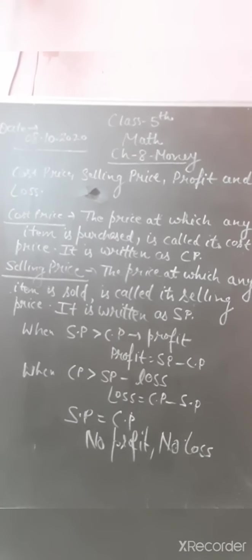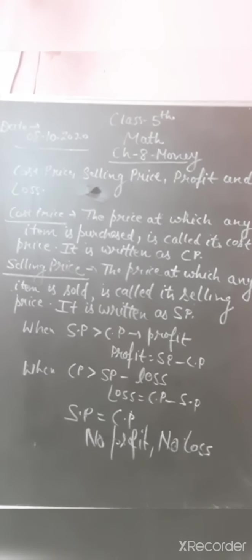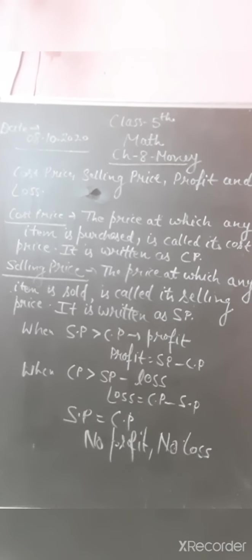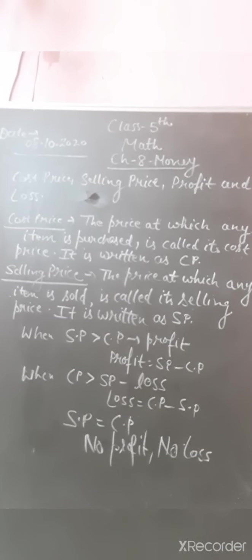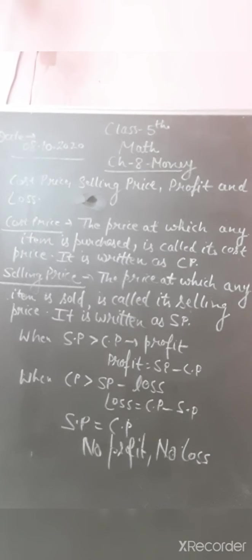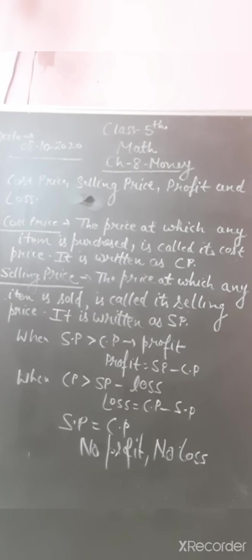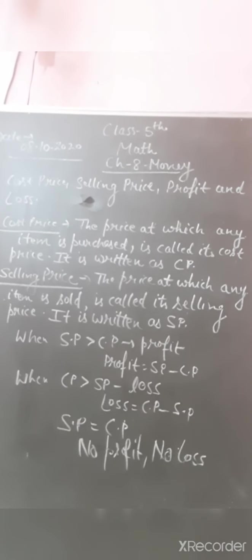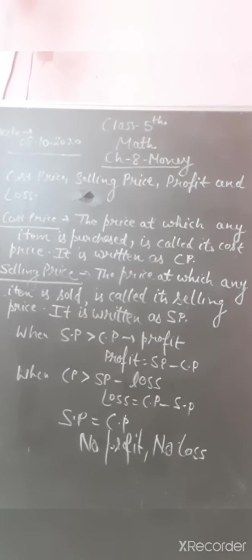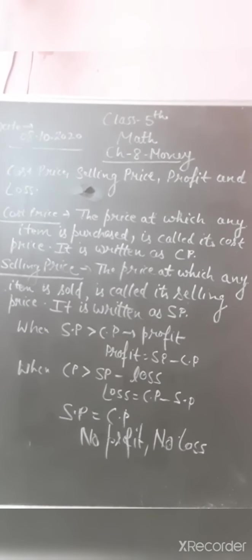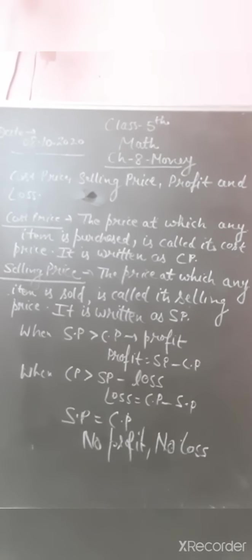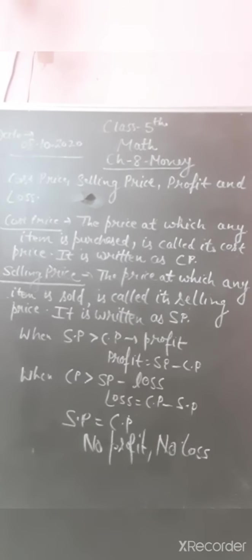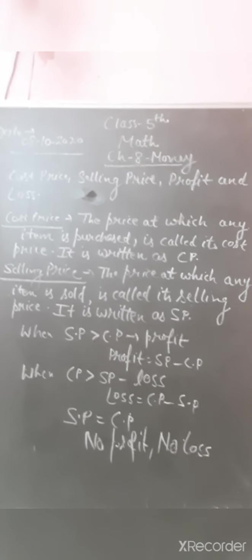If I purchased at a higher price and am selling at a lower price, I am getting less money — that is a loss. So when CP is greater than SP, there is loss, and Loss = CP minus SP. If selling price equals cost price — neither higher nor lower — then there is no profit and no loss.